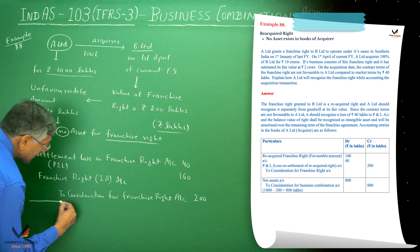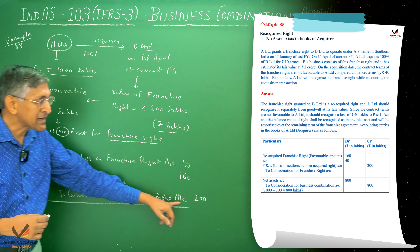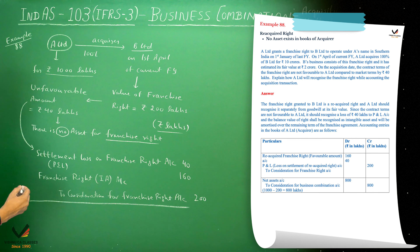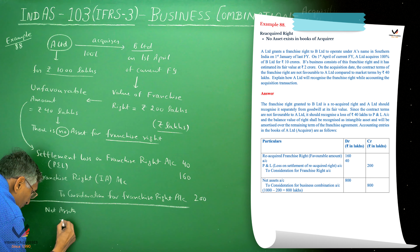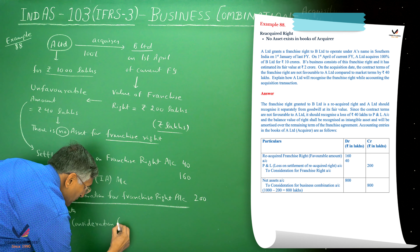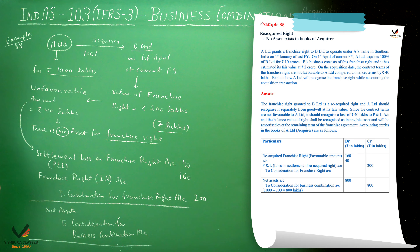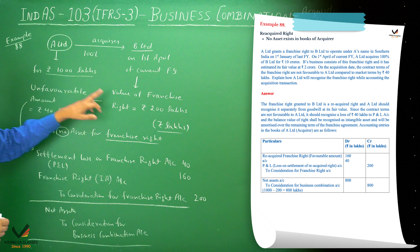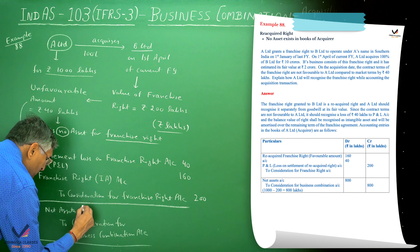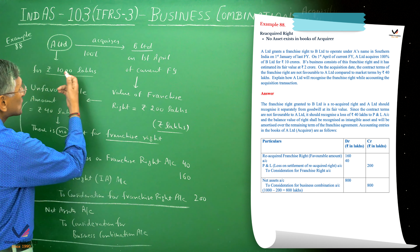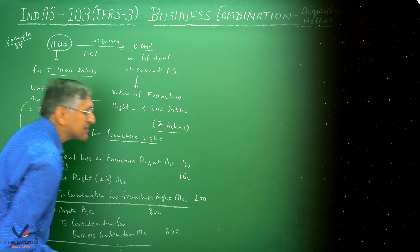The remaining net assets acquired in the business combination have a fair value. Two considerations are given for the business combination. For the acquired net assets whose fair value is not mentioned separately, the franchise right value of 200 lakhs is included. So the remaining assets' fair value will be 1000 minus 200, which is 100 lakhs. And the consideration for business combinations is also 100 lakhs.